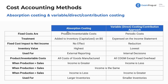All absorption costing is — and this is another topic that was never explained to me too well, with very lofty, super theoretical explanations — all it is, is a method where you capitalize your fixed costs. Under variable or direct costing, you simply expense fixed costs. That's all it is.